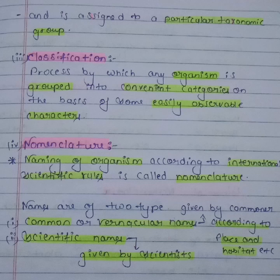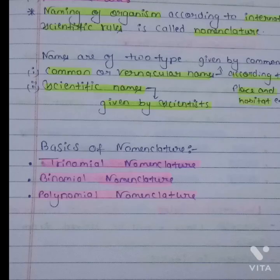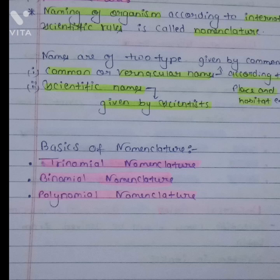Nomenclature is the naming of organisms according to international scientific rules. Names are of two types: common names or vernacular names, which are given by commoners, and scientific names, which are given by scientists. Common names or vernacular names change according to place, whereas scientific names are not changed by place.